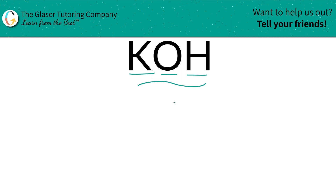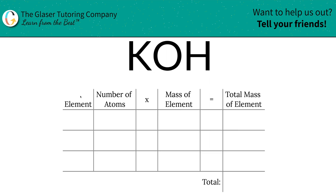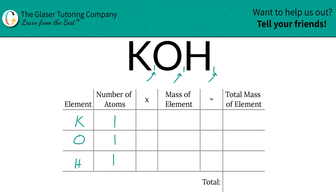First, we're going to find the mass, and then we're going to find those percents. So the first thing we're going to do is write the elements we see in the compound: potassium, oxygen, and hydrogen. Then we write down the number of atoms of each — that's where the subscripts come into play. If you don't see any subscripts, put in a one, because there is assumed to be one of them. Otherwise, if there was zero of them, what the heck would the letter be doing in the compound? Then multiply it by the mass of the element.